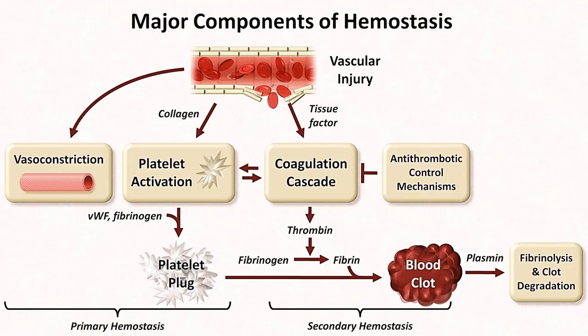Major components of hemostasis: vascular injury, exposure of collagen, vasoconstriction of the vessel, platelet activation, release of von Willebrand factor and fibrinogen, resulting in platelet plug leading to primary hemostasis. In the other pathway, activation of the coagulation cascade leads to formation of thrombin, which converts fibrinogen into fibrin, resulting in formation of a clot or stable plug called secondary hemostasis. This must be kept under control by antithrombotic control mechanisms, which lead to fibrinolysis and clot degradation.